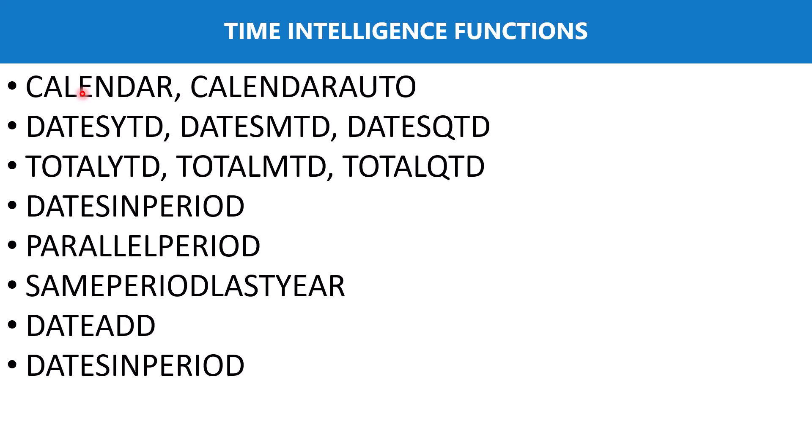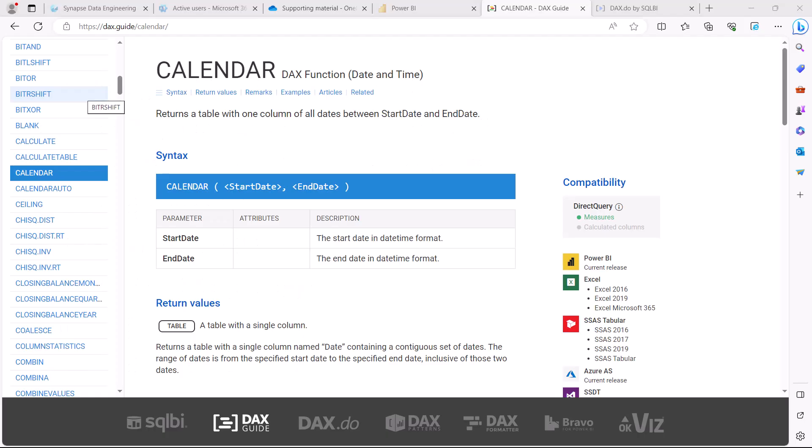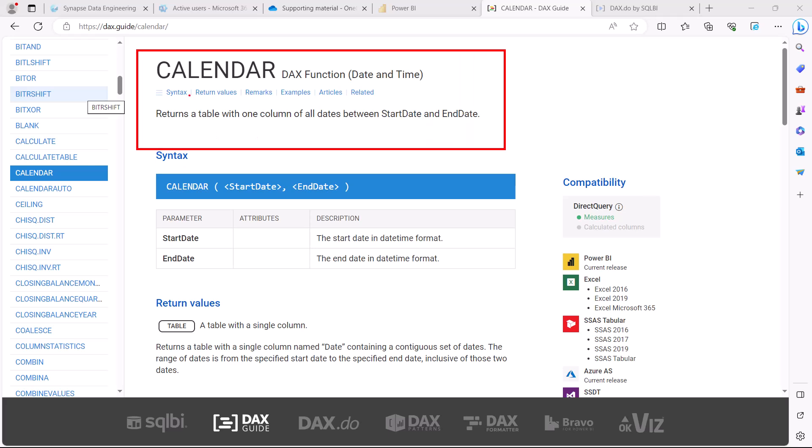A calendar table or date table is very important whenever we are talking about time intelligence functions. We slightly touched upon these two DAX functions but did not explore them fully. So let's go to the dax.guide website and first have a look at these two functions, then see how we can use them to create the date table.